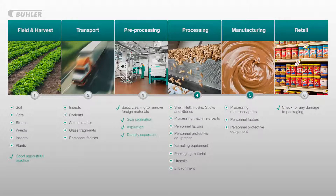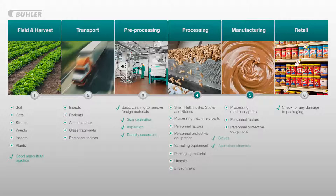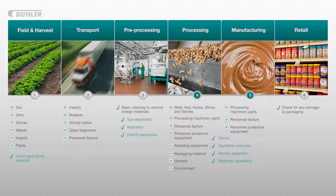After pre-processing the nuts are now ready to enter the food processing stage, which could be with a processor or a manufacturer. As mentioned there should be several points for foreign bodies to be removed during this stage. These may include separation technologies such as sieves and aspiration which remove foreign bodies such as husks by air, density separation removing foreign bodies by their density, and magnetic separation which removes ferrous metals such as machinery parts.